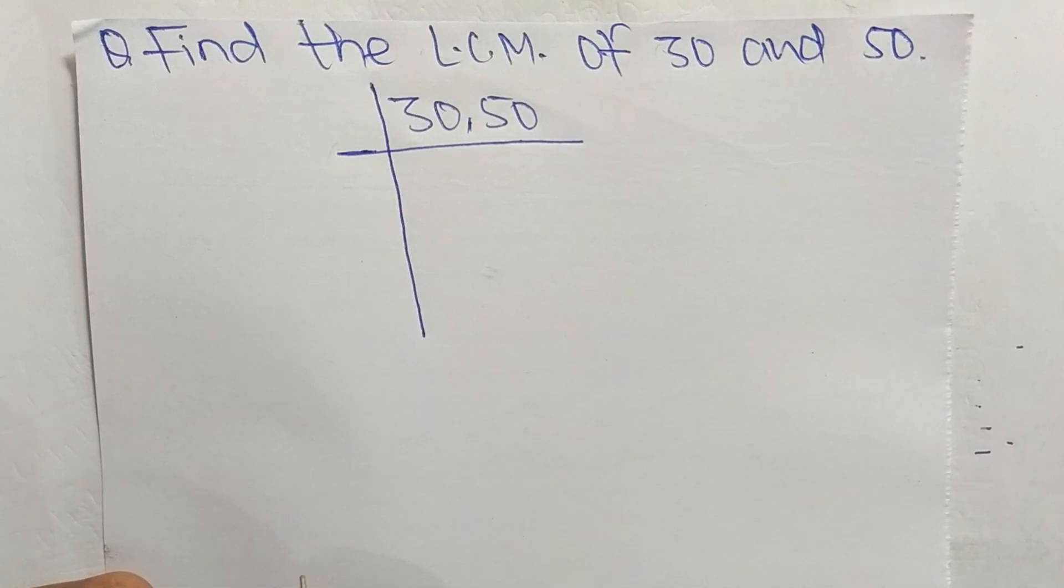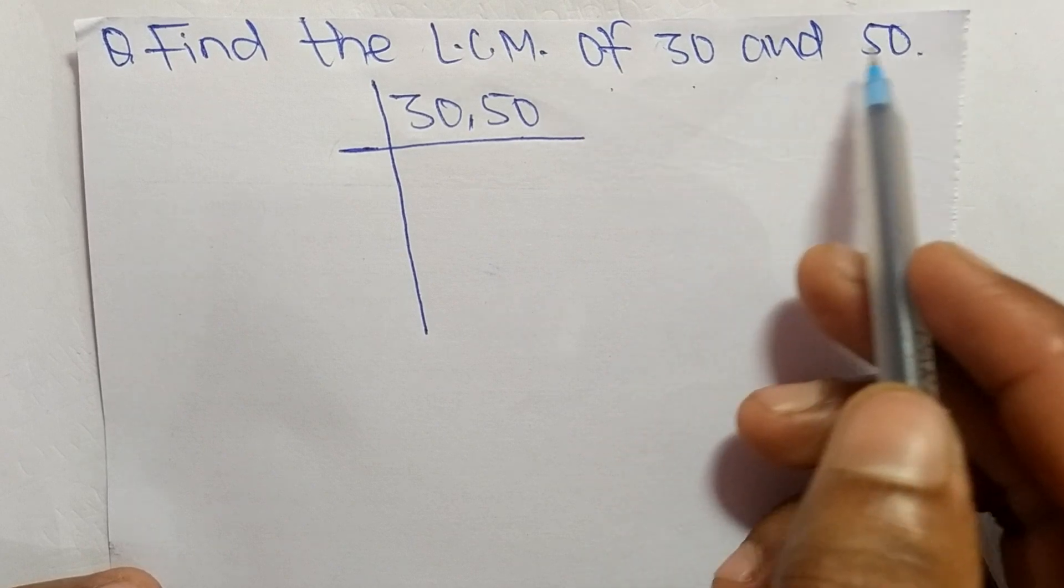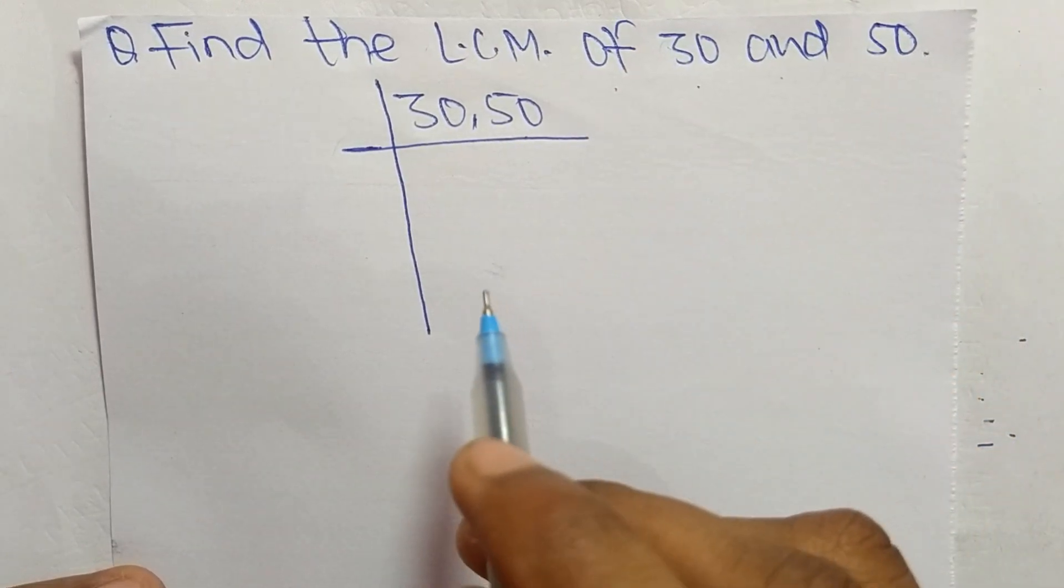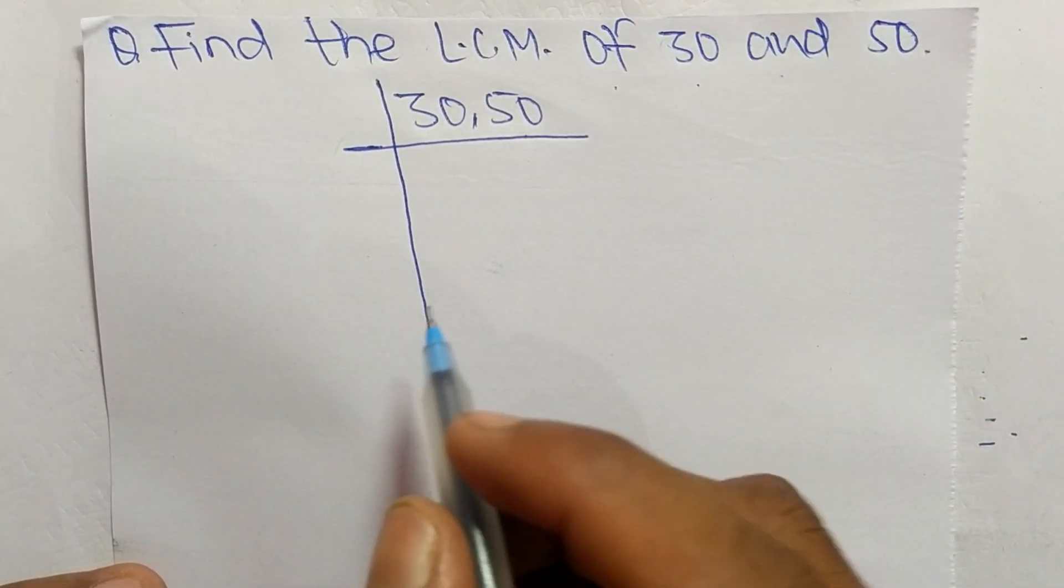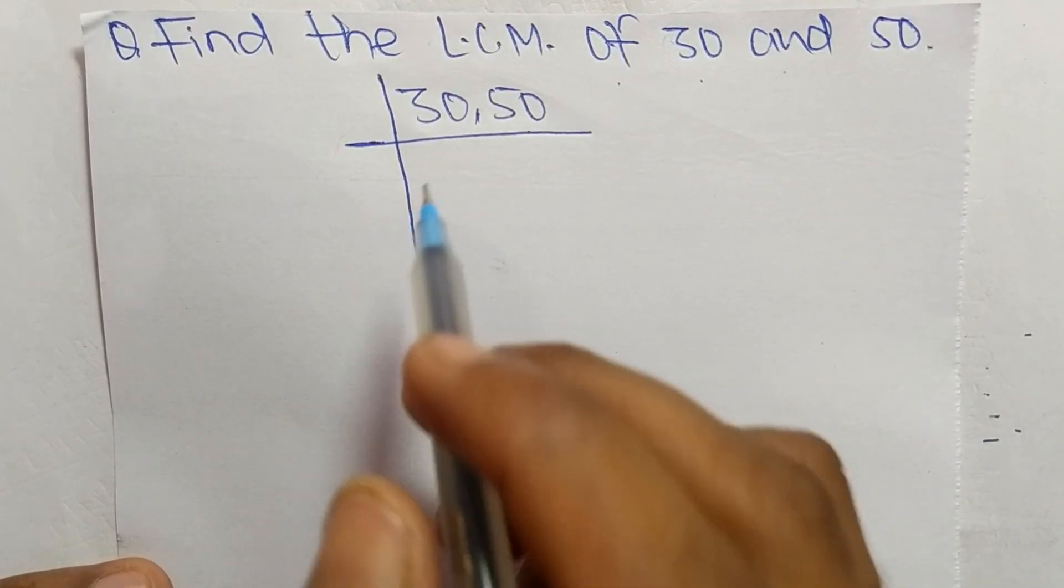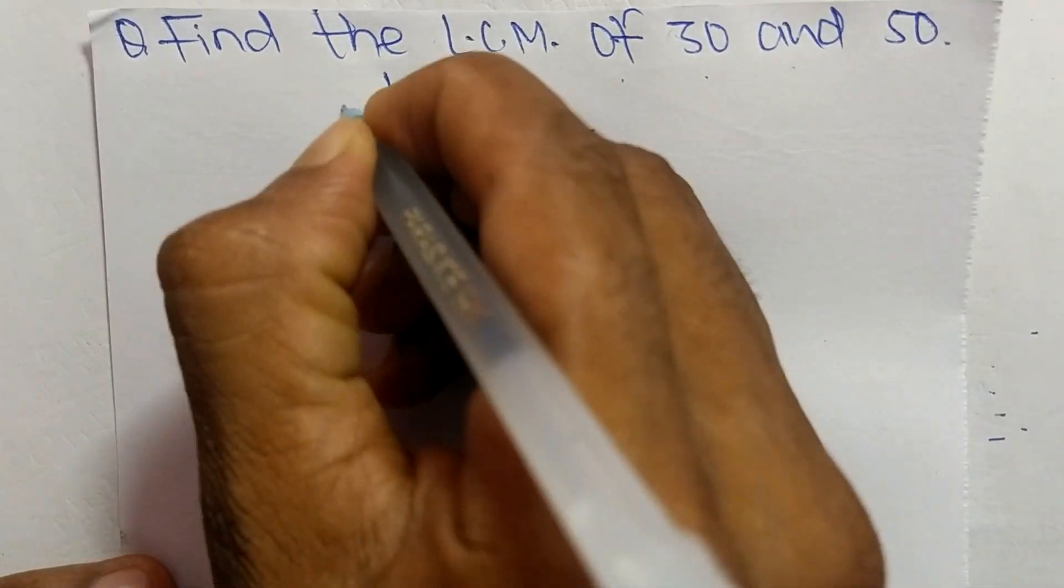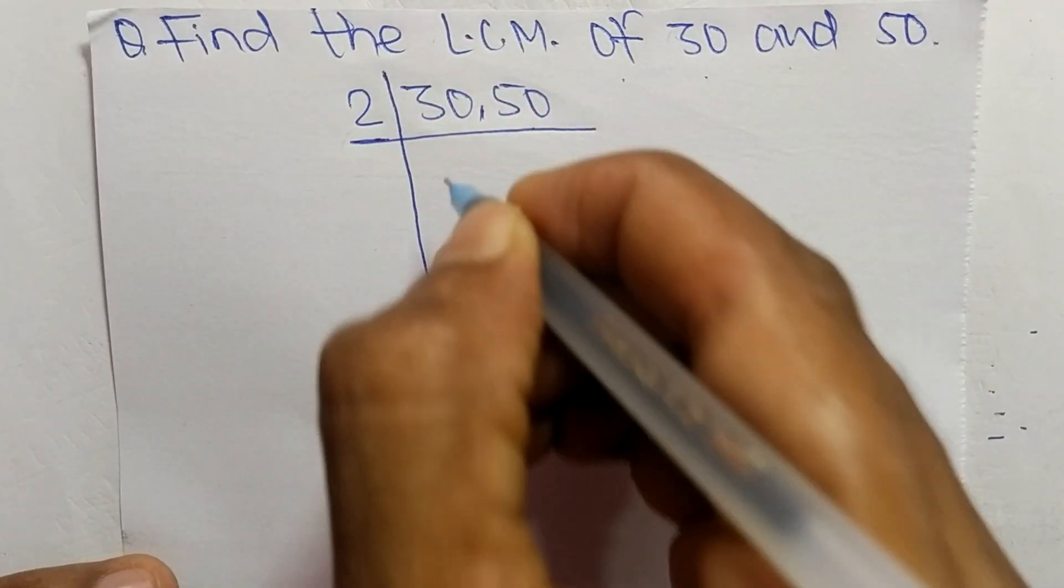So today in this video we shall learn to find the LCM of 30 and 50. To find LCM, first we choose the lowest number that can exactly divide 30 and 50. So the number is 2.